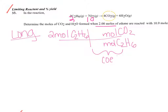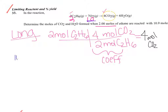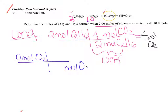We put two and four in the mole bridge ratio. Two times four divided by two is four. So ethane makes four moles of CO₂. For the other reactant, we start with 10 moles of O₂, bring those words down to the right, and cross the mole bridge again. It has to be the same product for both.